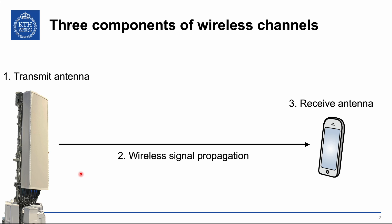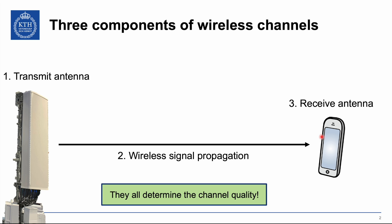There are three components that determine a wireless communication channel: the transmit antenna, the wireless signal propagation, and the receive antenna. All of these different parts determine the channel quality, so we can't just analyze one — we need to consider all three of them in order to understand how a wireless channel behaves.